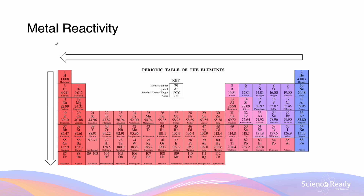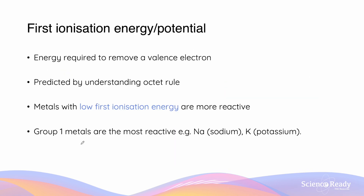The relative reactivity of different metals can be predicted by understanding the periodic table trends. What's provided is a colour-coded periodic table, ranging from red to blue, and we can see that there is an increase in reactivity from the right-hand side to the left-hand side of the table. There is also a similar trend from the top to the bottom of the table. This is the same periodic table trend as the first ionisation energy.